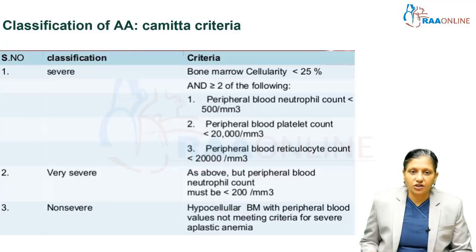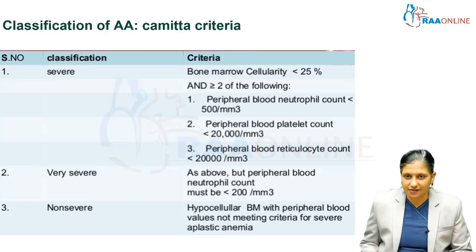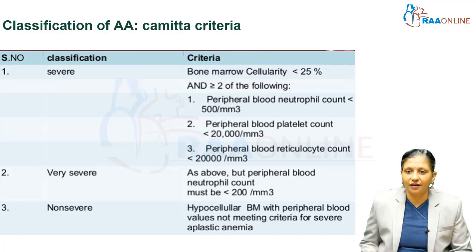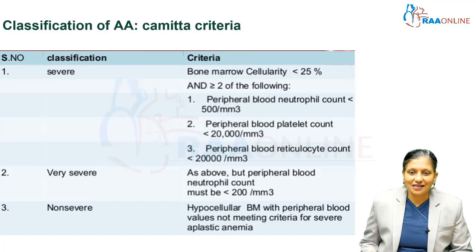Aplastic anemia has been classified as severe, very severe, and non-severe varieties. In the severe variety, bone marrow cellularity is less than 25%, plus two or more of the following: peripheral blood neutrophil count less than 500 per mm³, peripheral blood platelet count less than 20,000 per mm³, and peripheral blood reticulocyte count less than 20,000 per mm³.